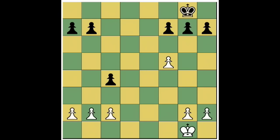What are those circumstances? The enemy pawn has to make an initial two-step move — move two squares for its initial move — and go past the square that your pawn would normally be able to capture it on.